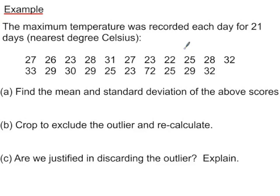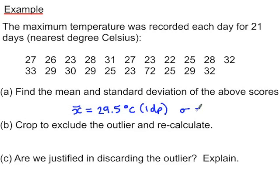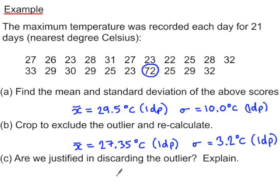Pause the video and calculate the mean and standard deviation for these scores, which are the maximum temperature recorded each day for 21 days. Make sure you can achieve a mean of 29.5 and a standard deviation of 10.0. Looking at the scores, there appears to be an outlier: 72 is significantly higher than any other value. Recalculate the mean and standard deviation excluding this value of 72, and check you can achieve those values. Are we justified in discarding the outlier?